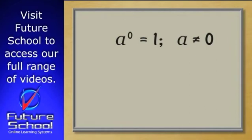We'll write this down as a general rule. a to the power of zero equals one, where a cannot equal zero. There is no meaning to zero raised to the power of zero.